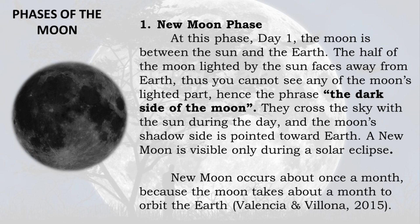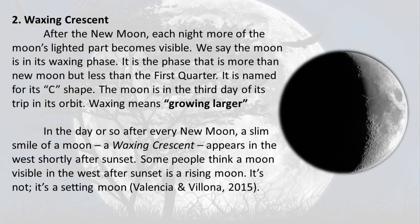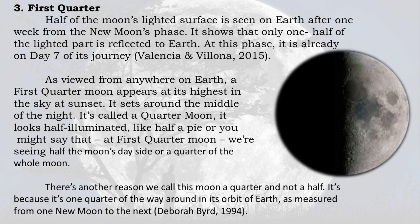New moon occurs about once a month because the moon takes about a month to orbit the Earth. Phase 2 — Waxing Crescent: After the new moon, each night more of the moon's lighted part becomes visible — we say the moon is in its waxing phase. It is the phase that is more than new moon but less than the first quarter. Named for its C shape, the moon is on the third day of its trip in its orbit. Waxing means growing larger. A slim crescent appears in the West shortly after sunset — it is a setting moon, not a rising moon.